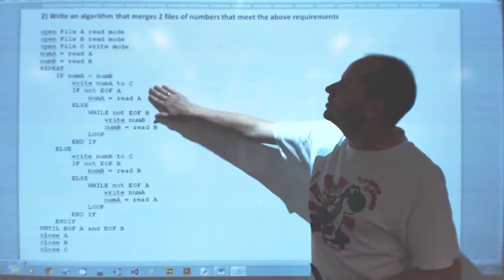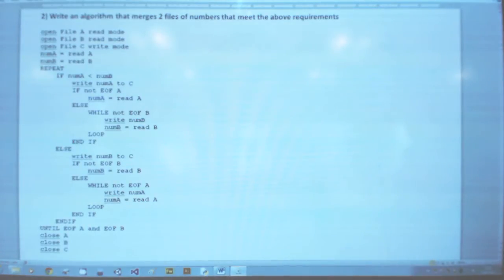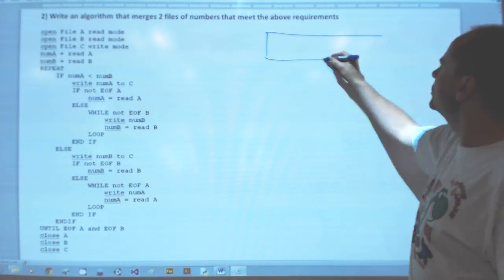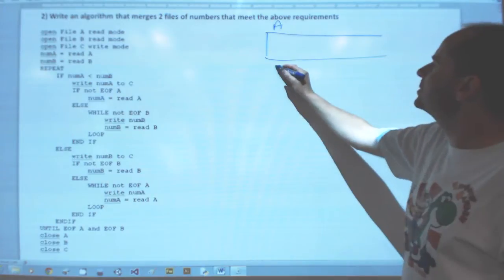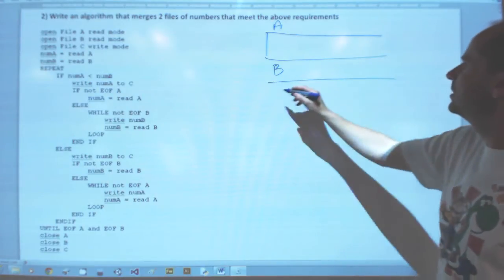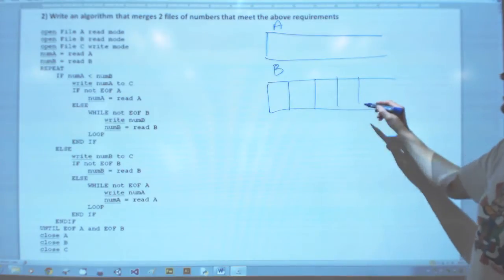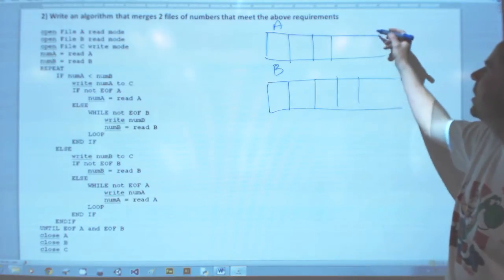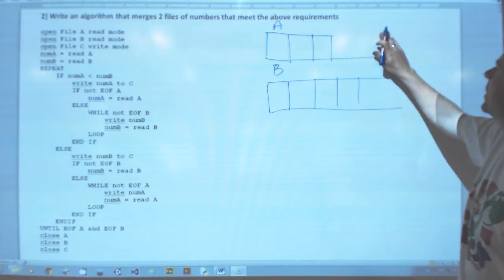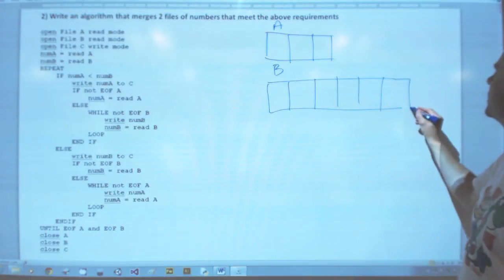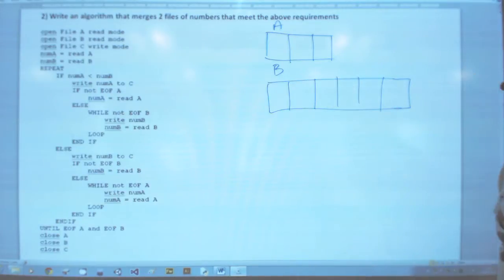Okay, merging two sequential files. Standard little algorithm. I'm just going to draw up a couple of files. Prerequisites required for this: you must have keys in sequence, and you must have no duplicates.